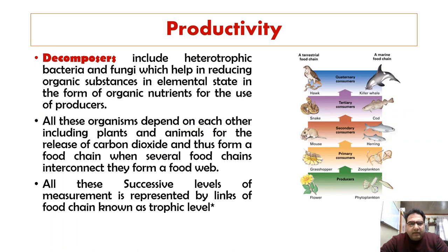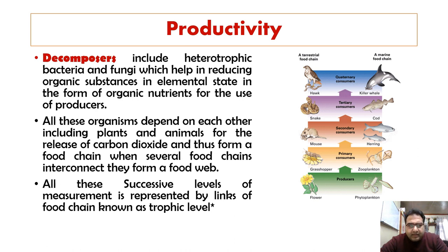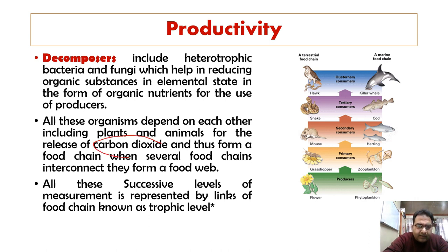Thirdly, we have the decomposers. Decomposers include heterotrophic bacteria and fungi, which help in reducing organic matter to the elemental state in the form of inorganic nutrients for the use of producers. These broken-down substances can again be utilized by plants or producers. All these organisms depend on each other, including plants and animals, for the release of carbon dioxide, forming food chains.